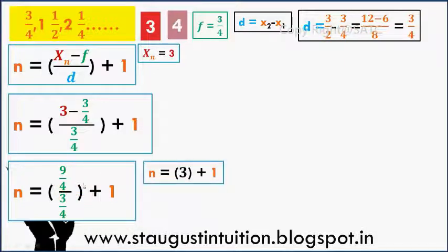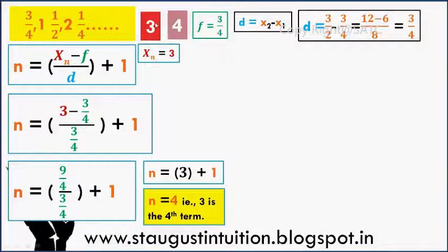The answer is 3 plus 1 is equal to 4. So this is 3. This is 4. Okay, this is 4. Clear.